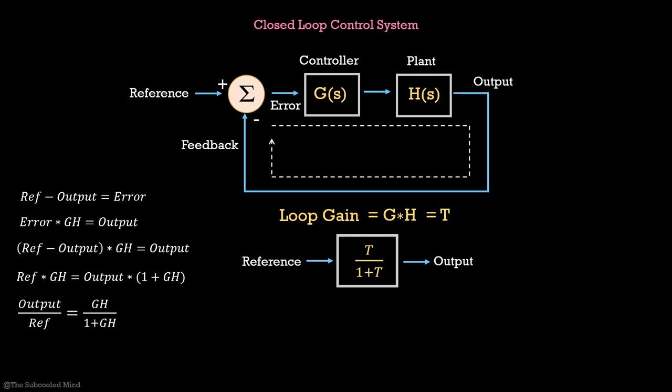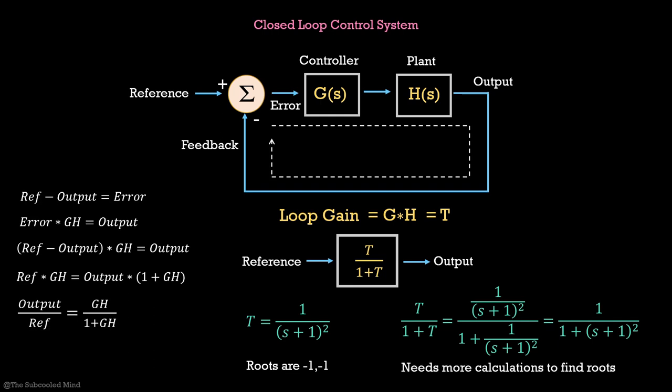For example, if T is 1 upon S plus 1 the whole square, you know the roots of S plus 1 the whole square is minus 1 and minus 1. But when you find T upon 1 plus T, you will have to do more calculations to find the roots and it can get much more complex for higher orders. There were also not any tools available in the olden times, but people were smart and they found different techniques to analyze the closed loop transfer function. To do it, we will use some approximations.